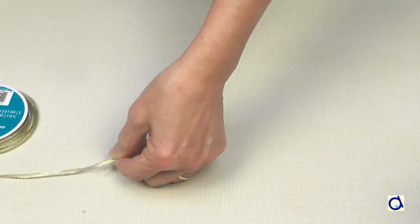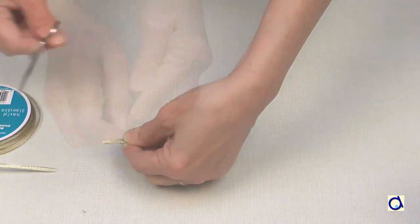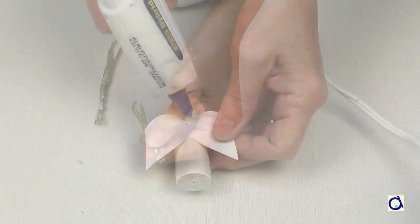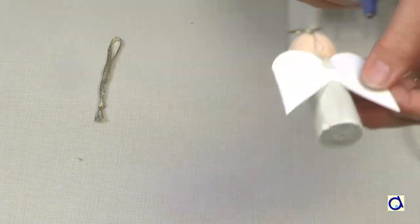Take a piece of gold ribbon. Make a knot to form a loop. Glue the knot at the top of the angel's back between the wings.